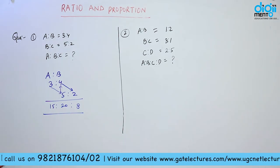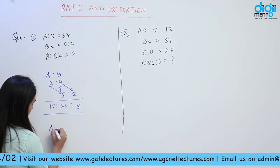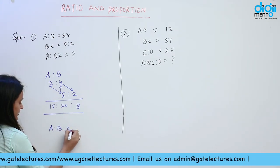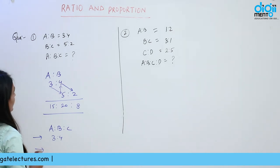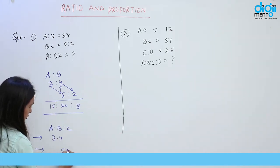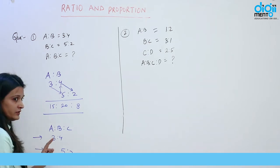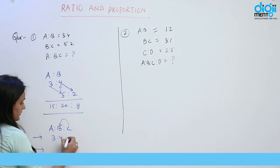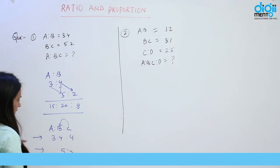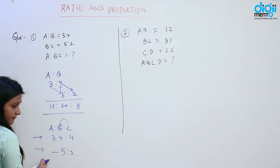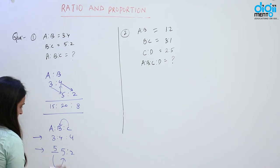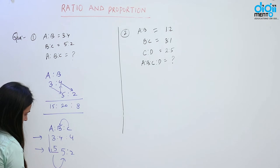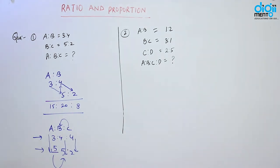One more way to find this ratio — the easiest one. First of all write A ratio B ratio C in the first row, then write the ratio of AB that is 3 ratio 4. In the second row write ratio of BC that is 5 ratio 2. In the first row the space of C is blank — to fill this space take the value from its side that is 4 and place it below C. In the second row the space of A is blank — to fill this, take the value from its side that is 5. Now multiply these numbers vertically: 3 into 5 is 15, 4 into 5 is 20, and 4 into 2 is 8. Here we get the ratio of A, B, C that is 15 ratio 20 ratio 8.